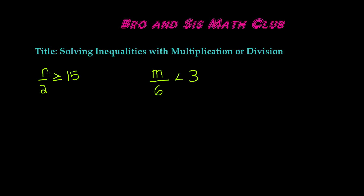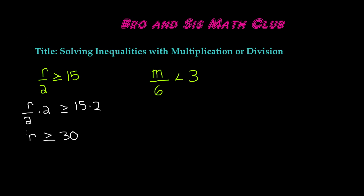So here we have r divided by 2 is greater than or equal to 15, and we know that r is being divided by 2. Remember, division can be eliminated by multiplication. So in order to get the variable by itself, we have to multiply by 2 on both sides. So we will have r divided by 2 times 2 is greater than or equal to 15 times 2. Remember, you have to do the same thing to both sides. The 2s will cancel each other out, and we will be left with r is greater than or equal to 15 times 2, which is 30.